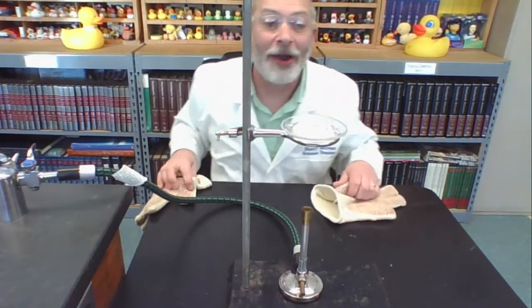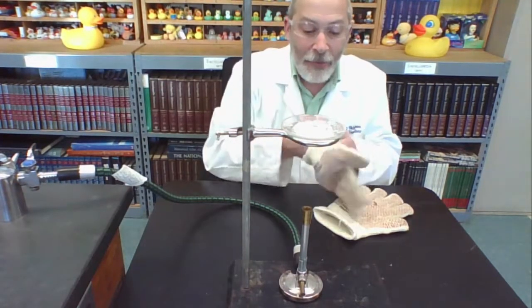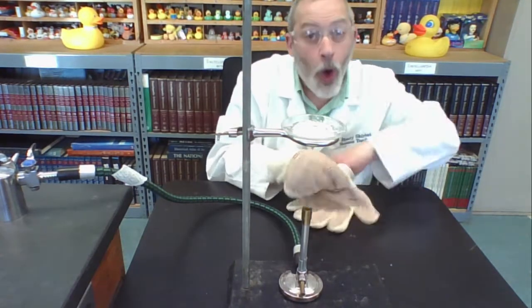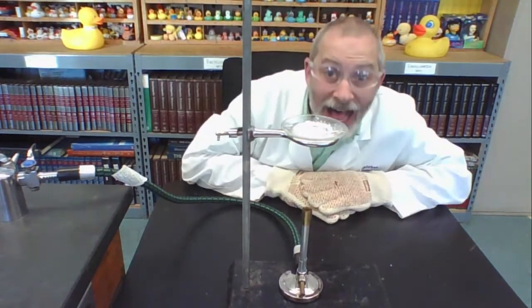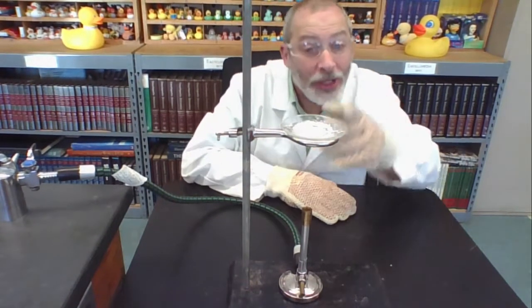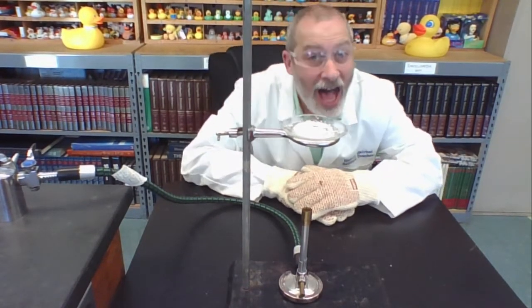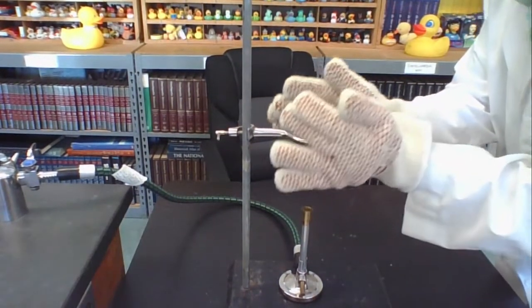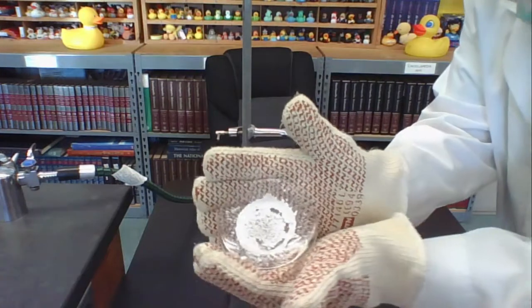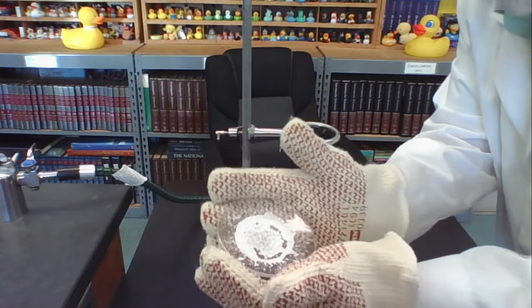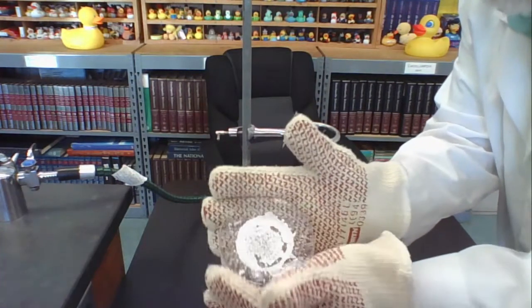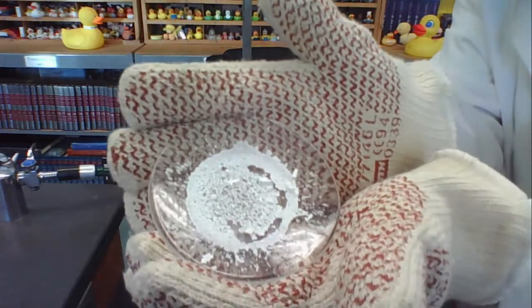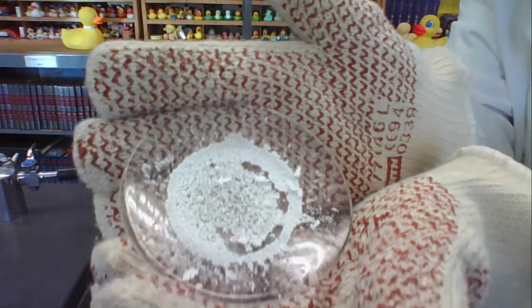Now I'm using my heat gloves because cold glass and hot glass both look the same, and we know for a fact that this is hot glass. But I want to give you a closer look as to that white residue left behind on this evaporating dish, and I think you know exactly what that white stuff is.